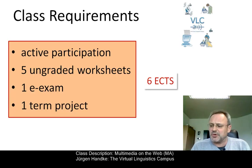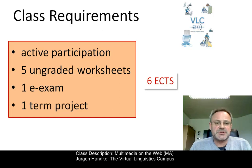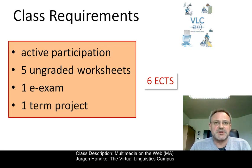You want to know what you have to do in order to get the class credit, where one credit is the equivalent of about 30 hours workload. All in all, you will be given six credits for this class. This includes active participation, which is a prerequisite. Then you have to deliver five ungraded worksheets, take part in our e-exam and pass it successfully, and deliver your term project — that is, the language you want to document.